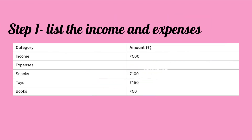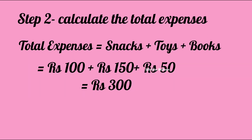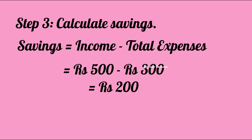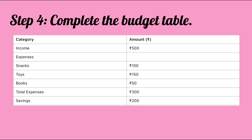Step one: list the income and expenses. Step two: calculate the total expenses, which equals snacks plus toys plus books. Step three: calculate savings, which equals income minus total expenses. Finally, step four: complete the budget table. See how easy it is!